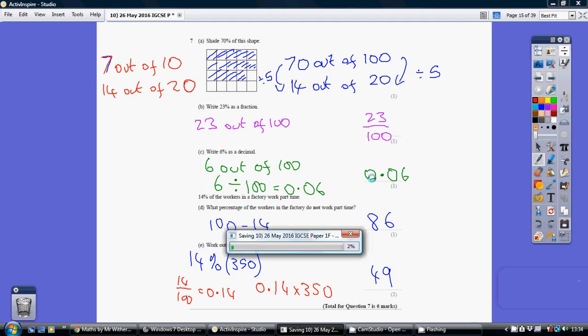Of course it should. So 7 out of 10 is the same as 14 out of 20. So we need to shade 14 boxes. So you can shade any 14 of those boxes to get the mark. Now for part B,